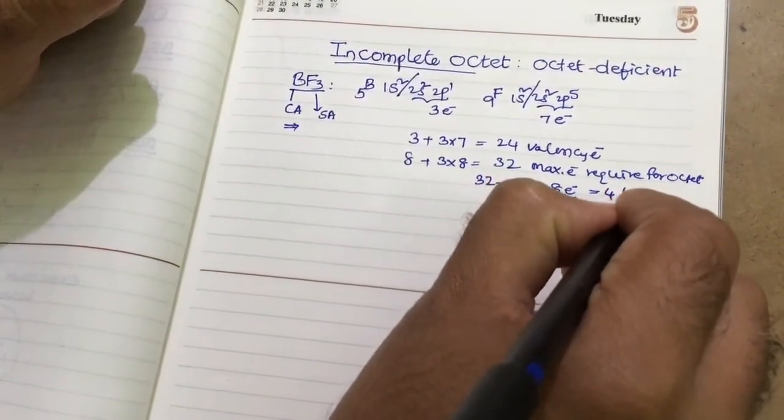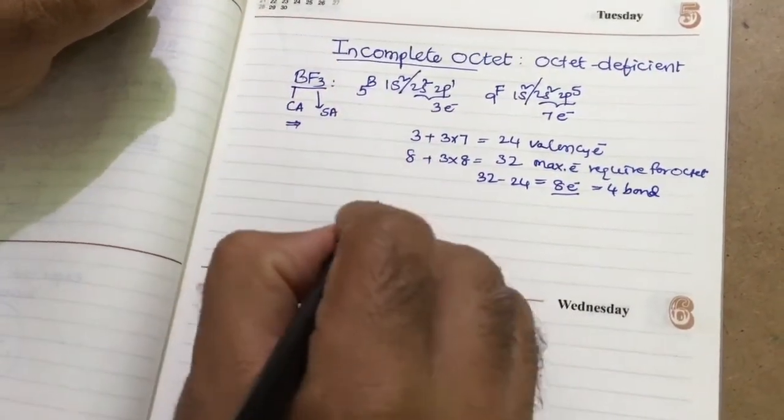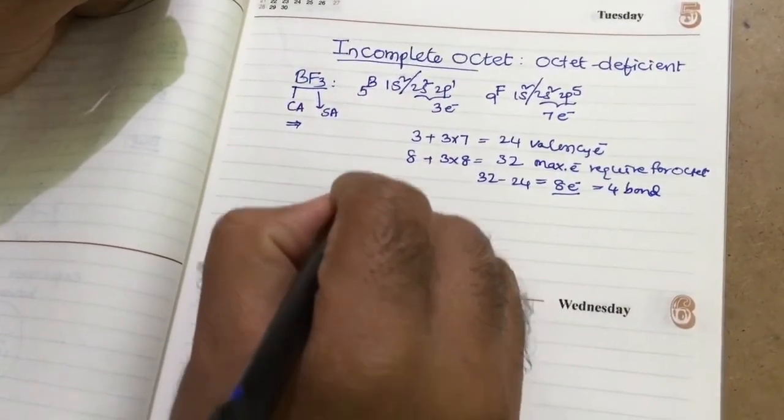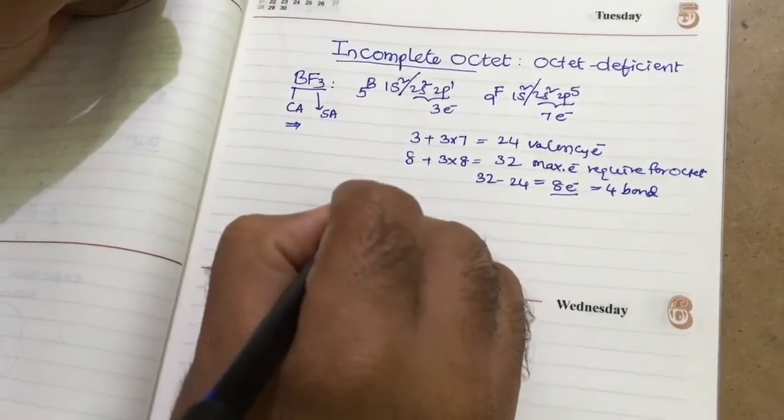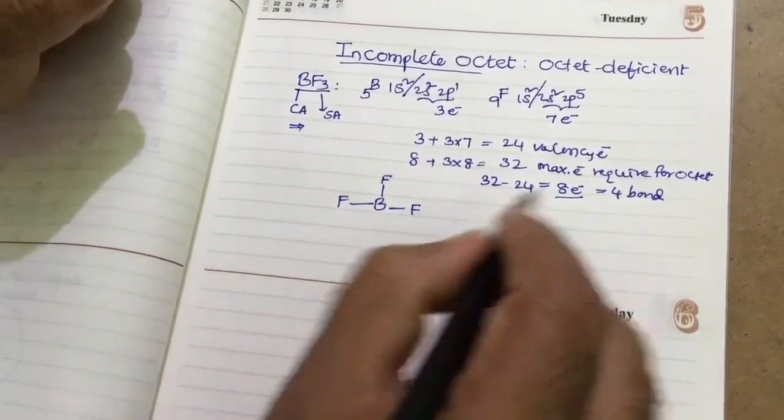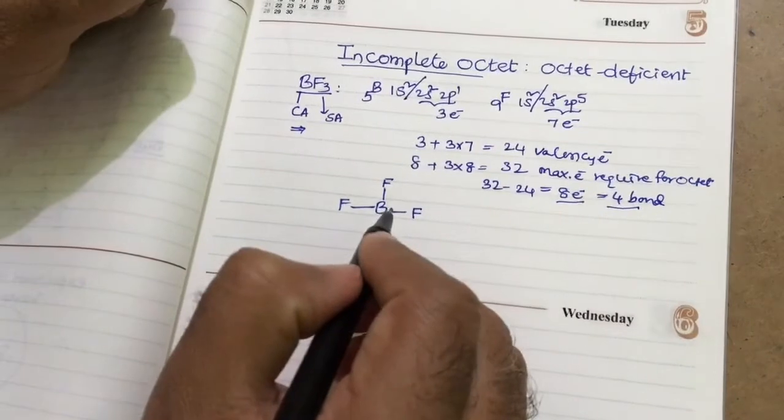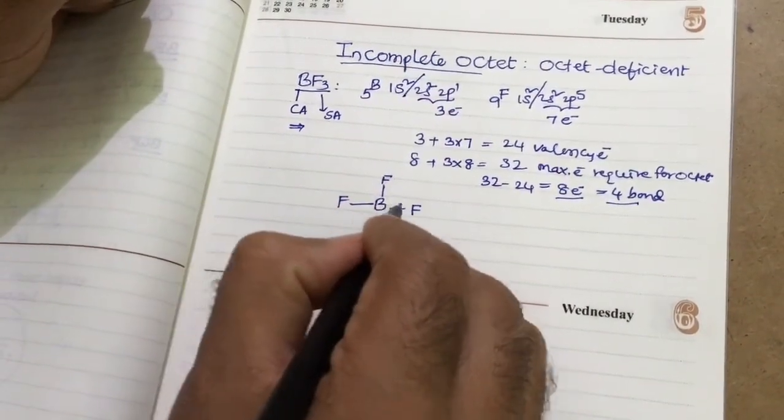4 bonds are formed between the boron and fluorine. That structure I want to draw here. This is 1 fluorine, 2nd fluorine, then 3rd fluorine. Total, how many bonds? 3 bonds. But according to this, how many bonds required? 4 bonds.